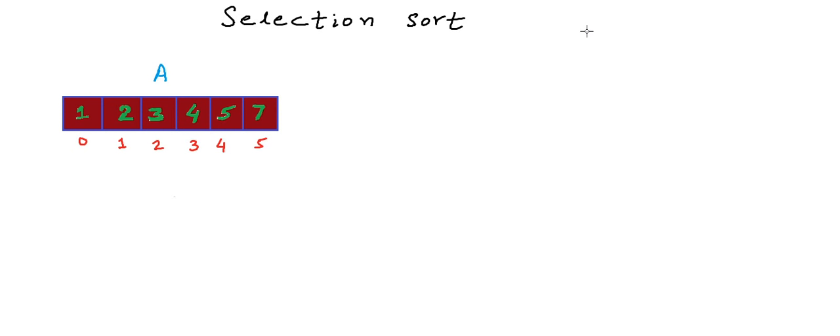This particular in-place logic of selecting the minimum in each pass, and putting it at its appropriate position, is selection sort algorithm. Let's now quickly write pseudocode for this algorithm. We will write a function named selection sort that will take the array and the number of elements in the array as argument.